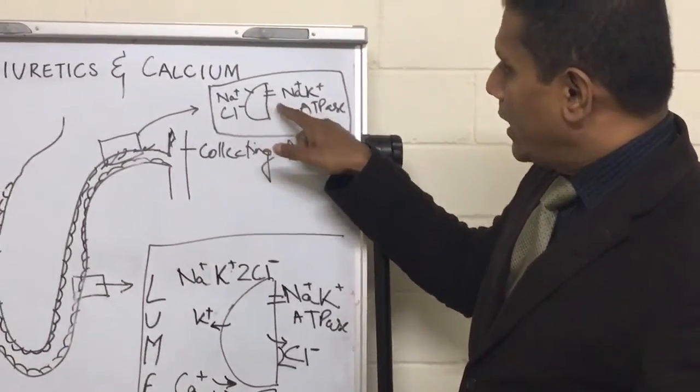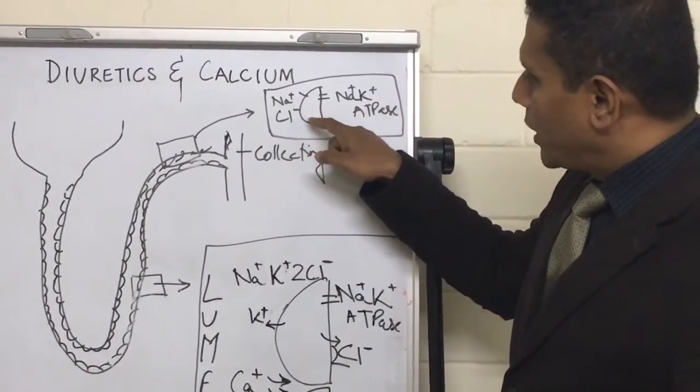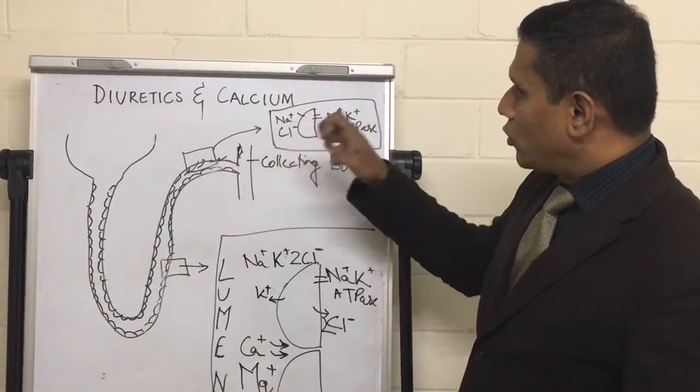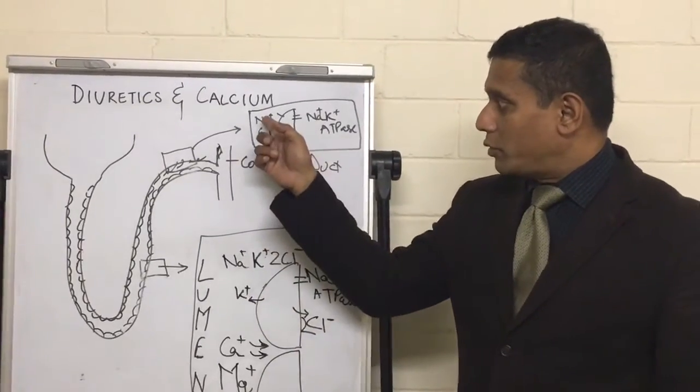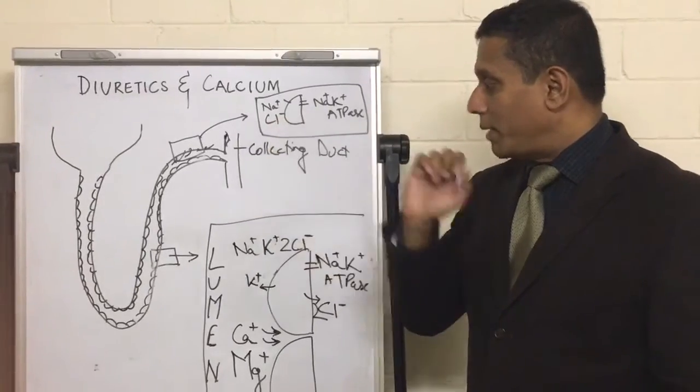So this cell, again, the same sodium-potassium ATPase is constantly chucking out three sodium, bringing in two potassium, so the cell is always deficient for sodium. Here, the cell takes sodium in the form of sodium chloride—thankfully, a much easier process than this one. So one positively charged sodium and one negatively charged chloride is gained by the cell.